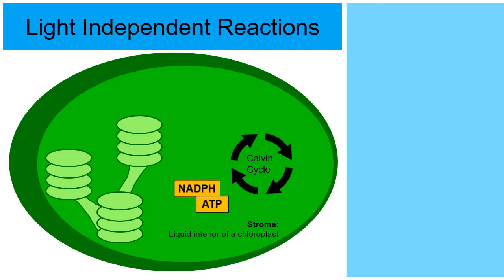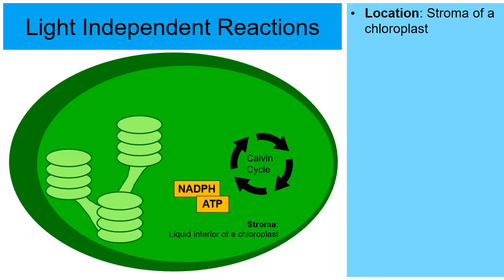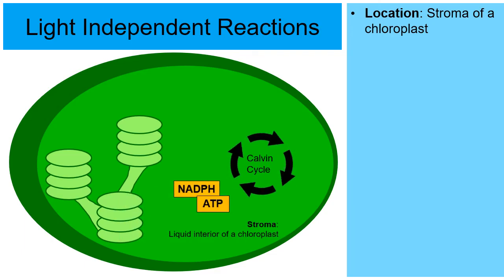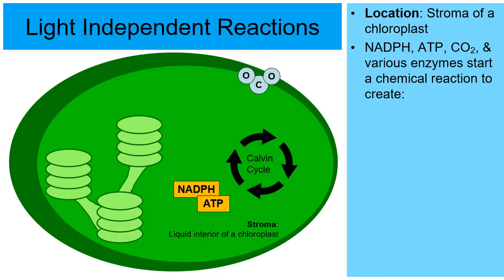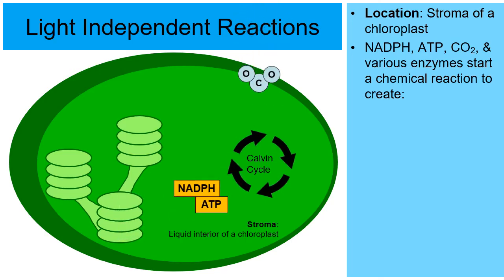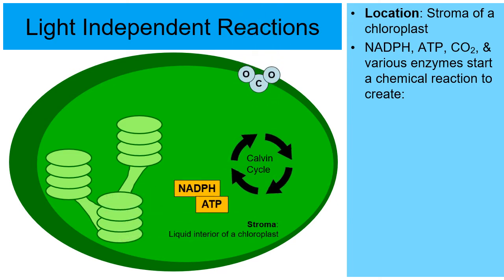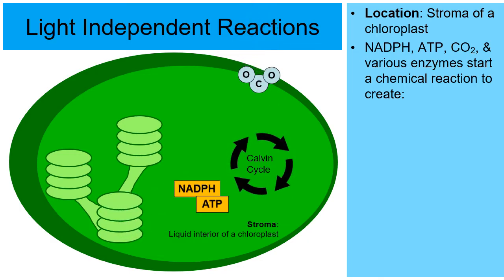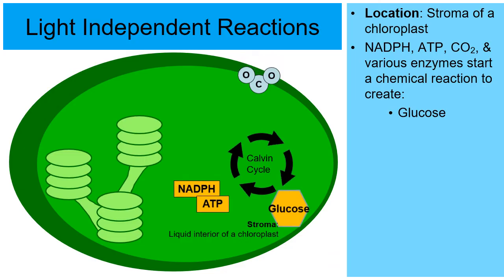Now let's focus on the light-independent reactions, also known as the Calvin cycle. The location of the Calvin cycle is the liquid interior of the chloroplast — the stroma. The inputs are carbon dioxide from the atmosphere, plus the ATP from the light-dependent reactions, plus the NADPH from the light-dependent reactions. Together these start the Calvin cycle, a series of chemical reactions that create glucose (C₆H₁₂O₆).